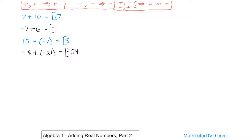For our next problem, we have negative nine plus negative nine. We have two negative numbers we're adding together — we start with a negative number and we're adding even more negative to it. It's like we owe money and we're adding more debt. The answer is still going to be negative, and nine plus nine gives you 18, so the answer is negative 18. It's like you owe $9 and then borrow nine more — at the end of the day you owe $18.